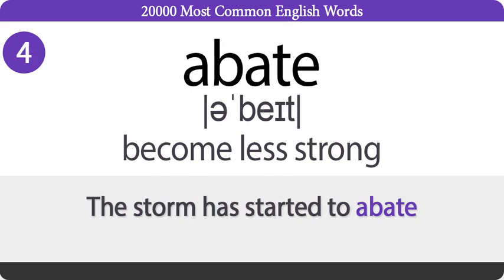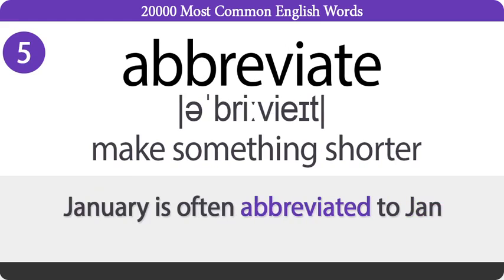Abate: Become less strong. The storm has started to abate. Abbreviate: Make something shorter.